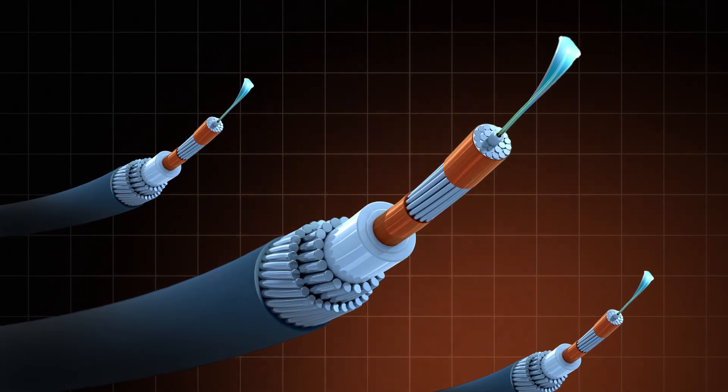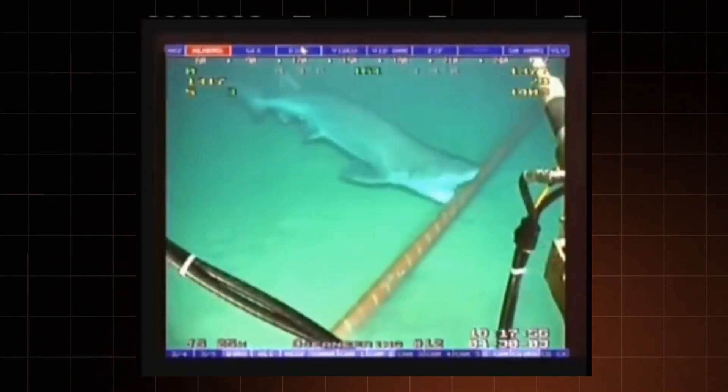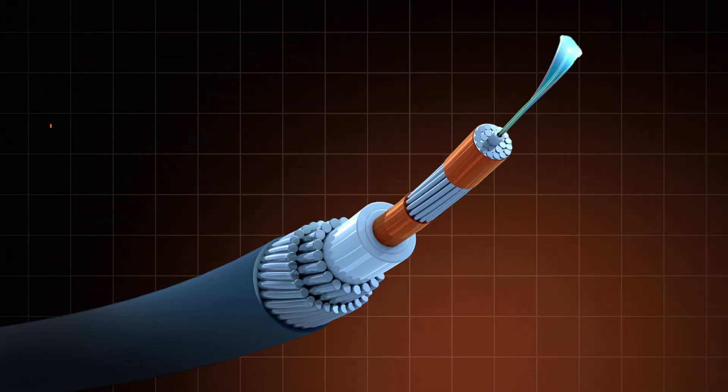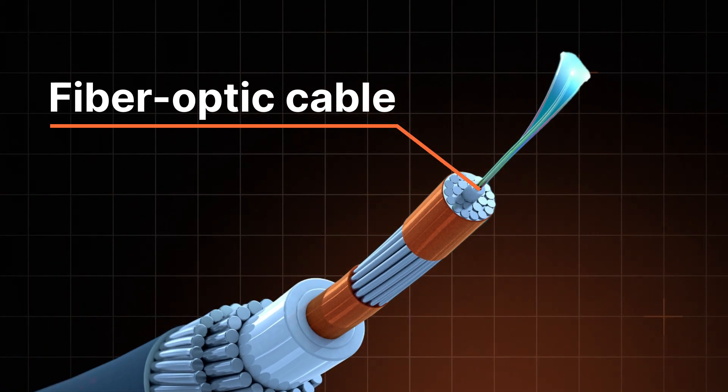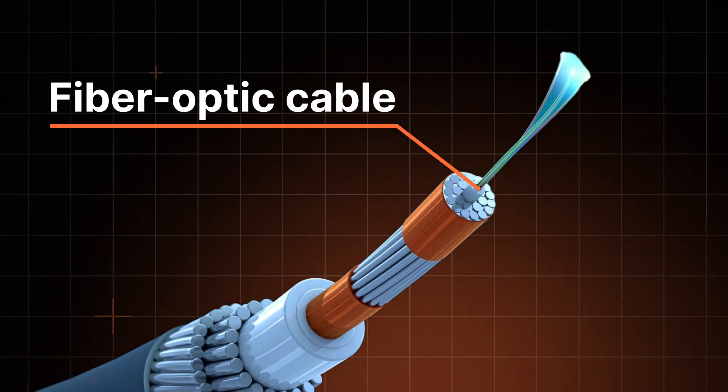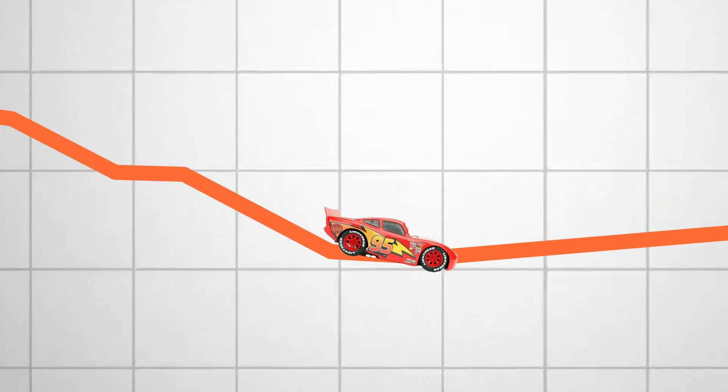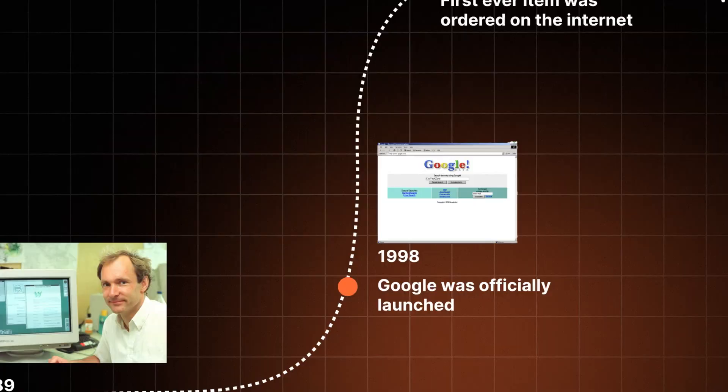An internet line connecting a city is easy to imagine, but how do we communicate with other countries? Other continents? More wires — big ones, usually running across the bottom of the ocean. And in that big cable, there's a teeny tiny fiber optic cable. This one transmits the data through light pulses, which is a major improvement. And this is where we are today.